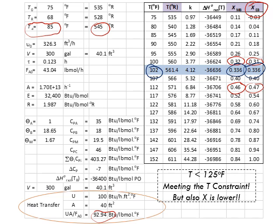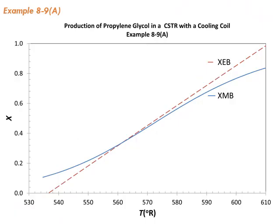Looking at the graphical solution, the intersection between XMB and XEB gives the steady-state temperature and conversion of approximately 33.6%. With this, we finish today's lecture and will continue in the following lecture.